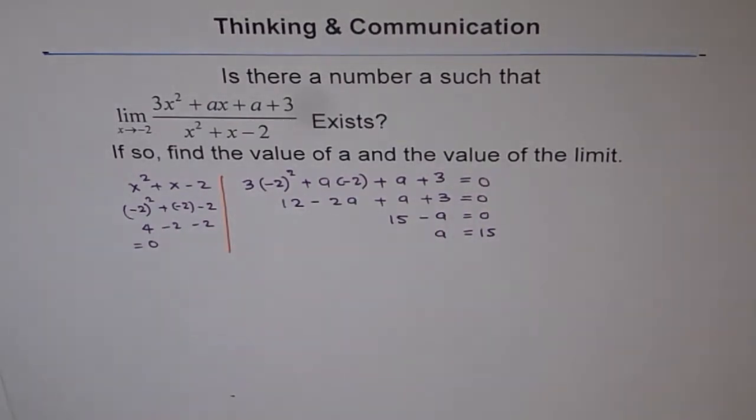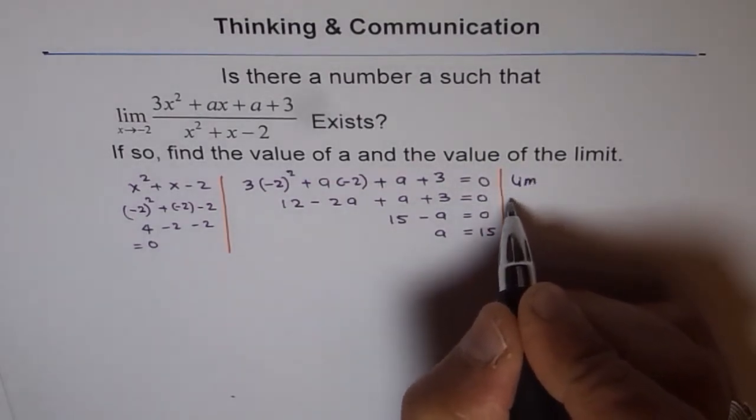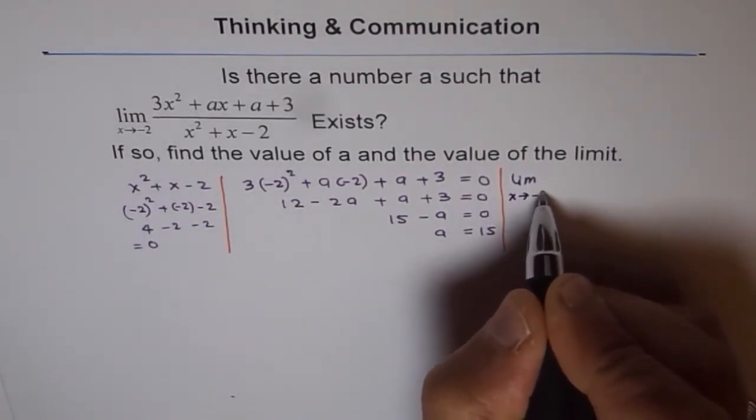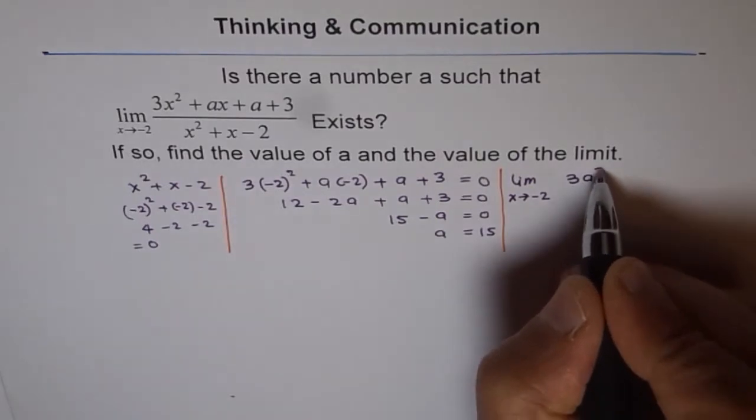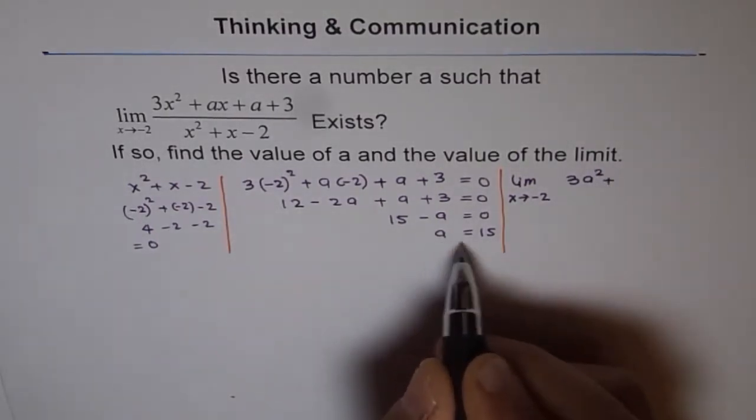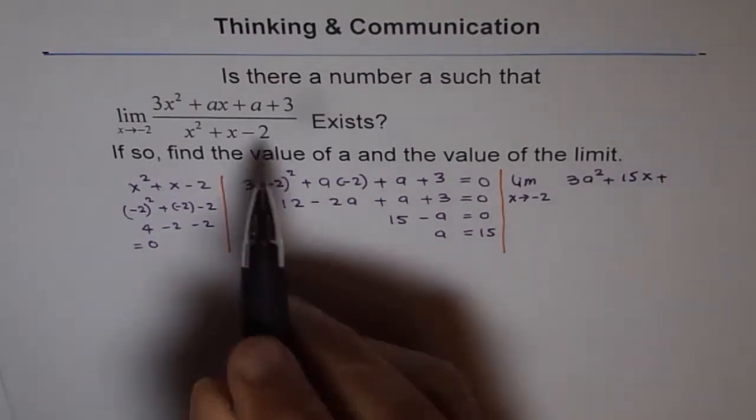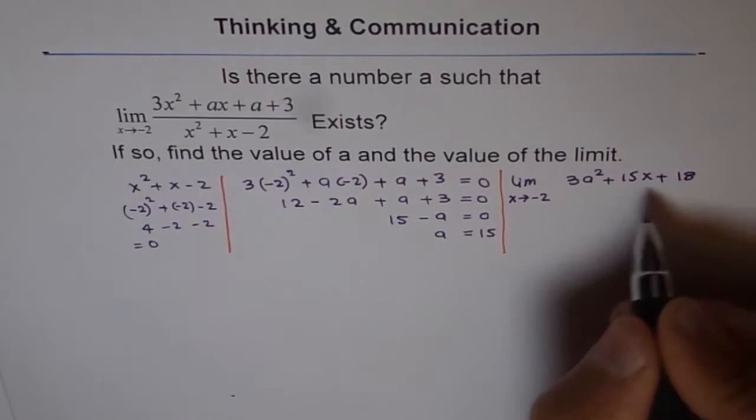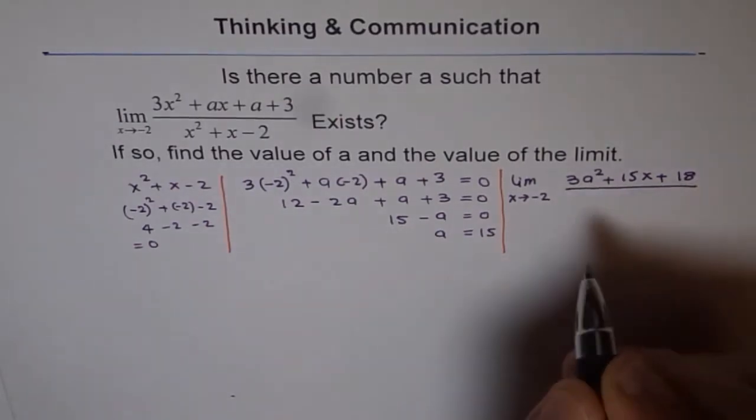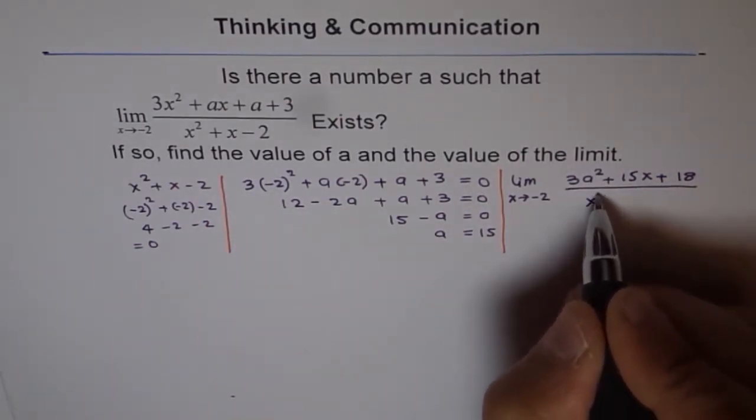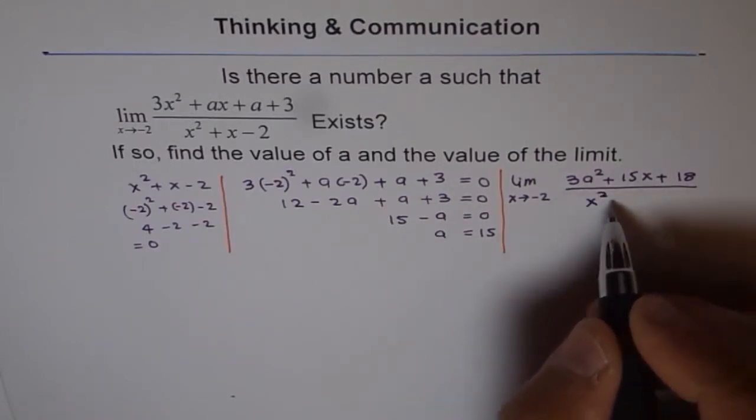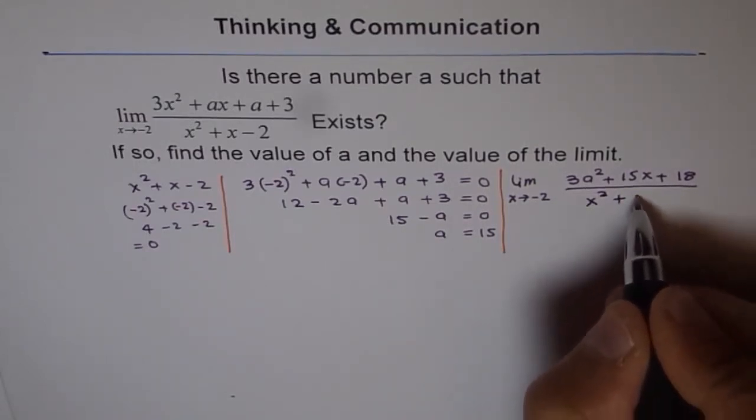So, we know a is 15. Only if a is 15 we can solve this question. So, let me write down now our question. Now, our question now becomes limit x approaches minus 2 for 3x square plus instead of a I am writing 15 now. 15x plus 15 plus 3 is 18. Divided by x square plus x minus 2.